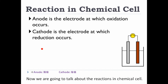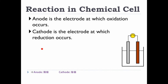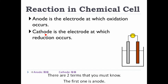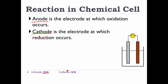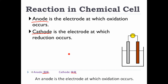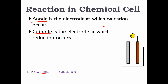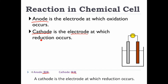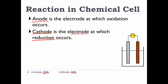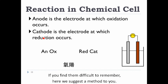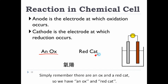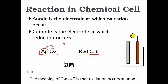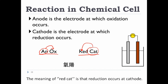Now we are going to talk about reactions in a chemical cell. There are two terms you must know: the first is anode, and the second is cathode. An anode is the electrode at which oxidation occurs. To help remember, think of 'an ox and a red cat' — oxidation occurs at the anode, and reduction occurs at the cathode.